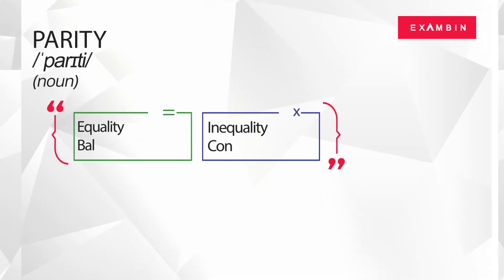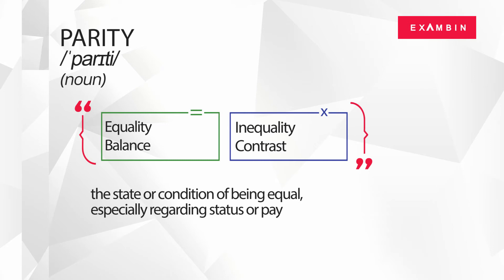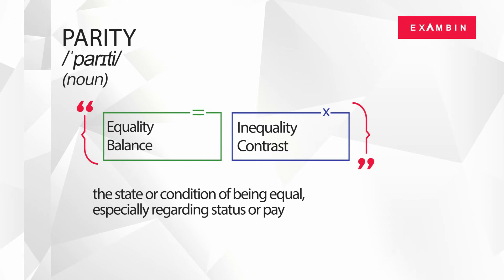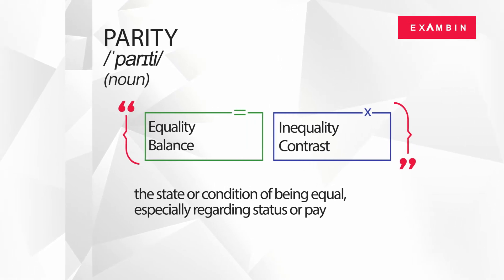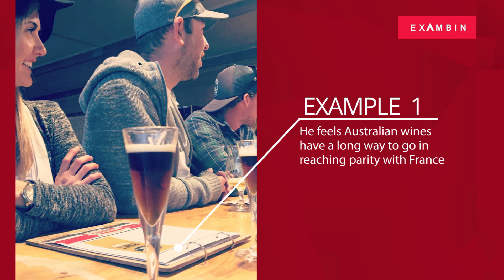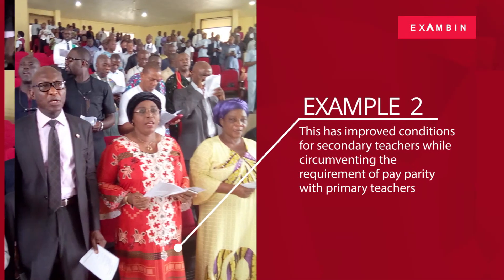Parity. The word parity is a noun. The direct synonyms of parity are: Equality, Balance. In general context, the word parity means the state or condition of being equal, especially regarding status or pay. Inequality and Contrast are some of the terms referring to the opposite meaning of the word parity. He feels Australian wines have a long way to go in reaching parity with France. This has improved conditions for secondary teachers while circumventing the requirement of pay parity with primary teachers.